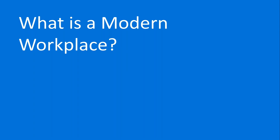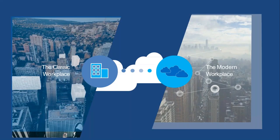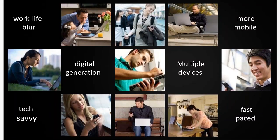So what is a modern workplace? The best way to describe it is to start thinking about what was the classic workspace. The classic workspace was businesses having their own premises, all staff working in those premises, typically nine to five, with all their software running on servers inside their own business. The modern workplace is not the same — we have more tech-savvy users using digital tools, life has become much more fast-paced and mobile, people work across different devices, and there's definitely a work-life blur.